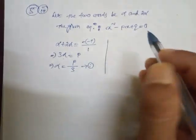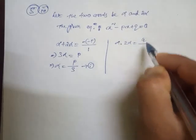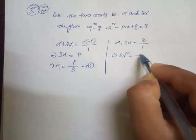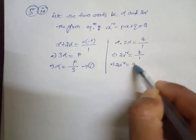And product of the roots. So alpha into 2 alpha equal to c by a. c is q by 1. So 2 alpha squared equal to q. So we write down here 2 alpha squared equal to q.